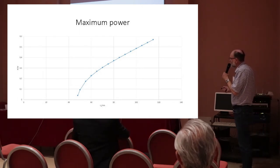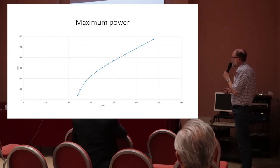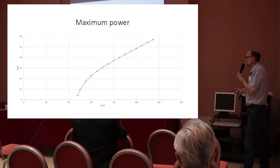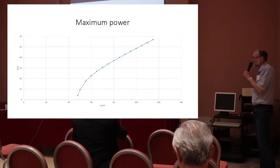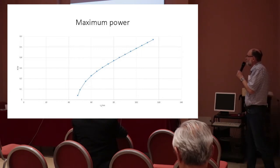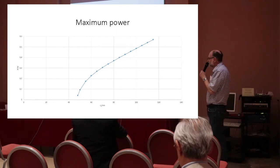Performing the numerical calculation, I get this kind of plot. In the horizontal axis, I have the radius in nanometers, and in the vertical axis, I have the excess power in watts.